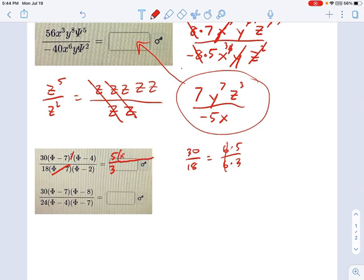So there's my x minus 7, or phi minus 7, if you prefer. And then I've got a phi minus 4, and a phi minus 2. And that's it. That's as far as you can go with it.